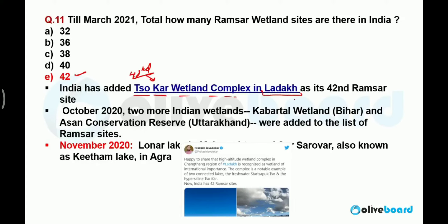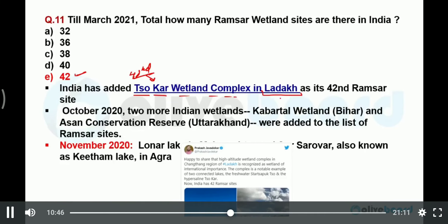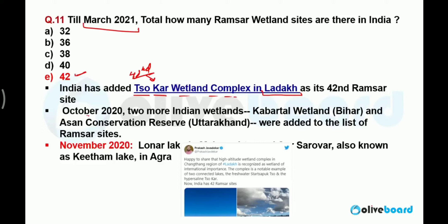Tso Kar Wetland Complex is situated in Ladakh. This is very important — there are 42 Ramsar sites as of the date of recording. In October 2020, Kabartal Wetland of Bihar and Asan Conservation Reserve of Uttarakhand were added to the list. In November 2020, Lonar Lake in Maharashtra was also announced as a Ramsar site. These were the four recent Ramsar sites added, increasing the list from 38 to 42.